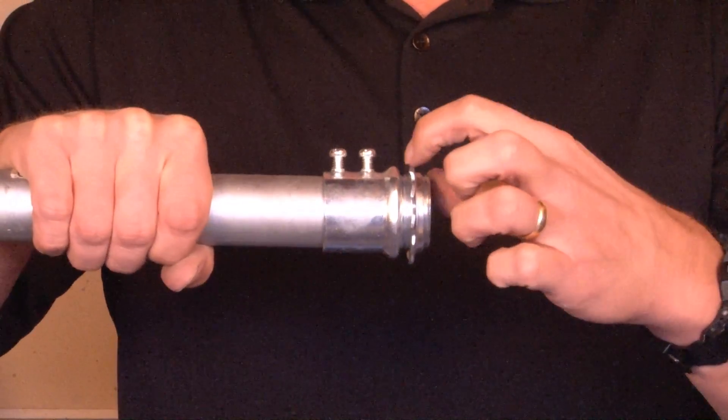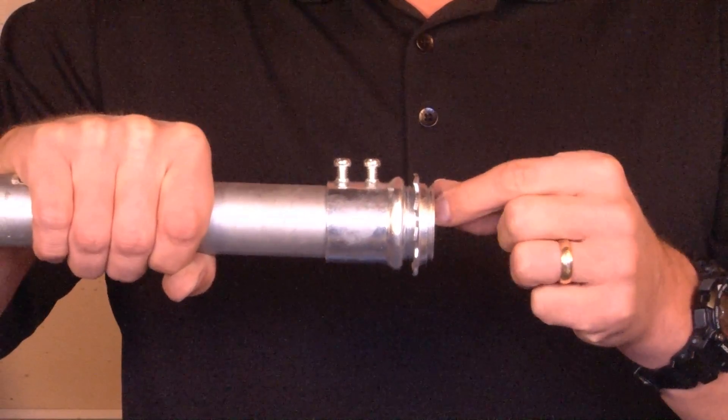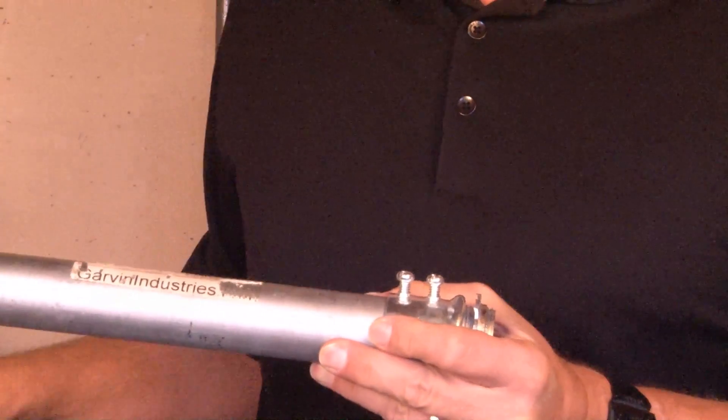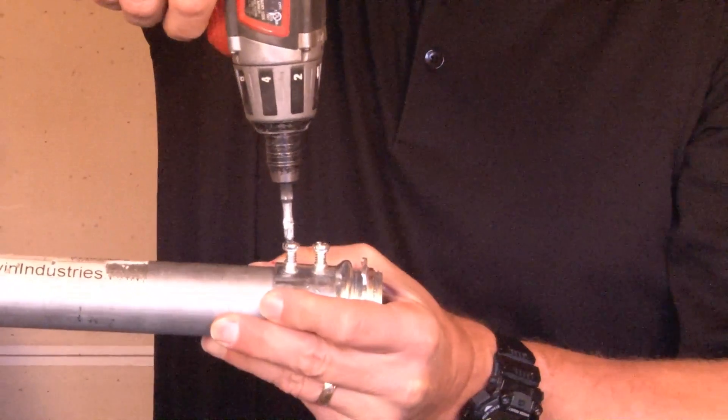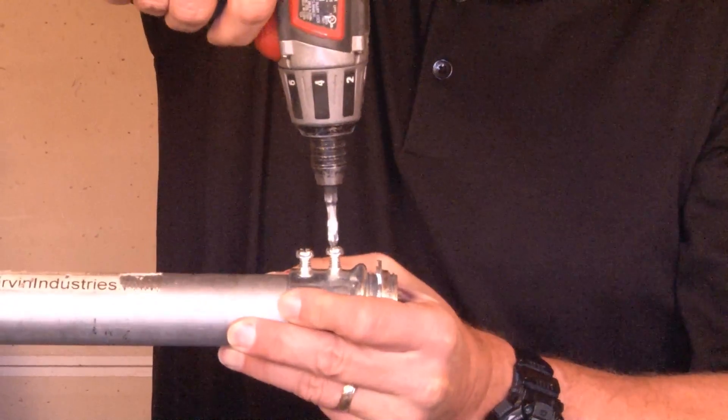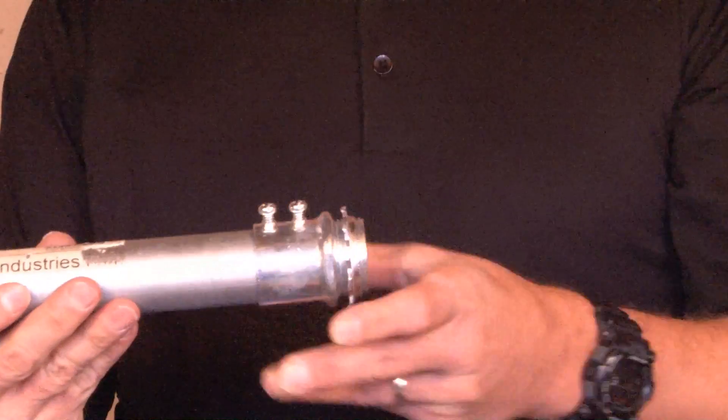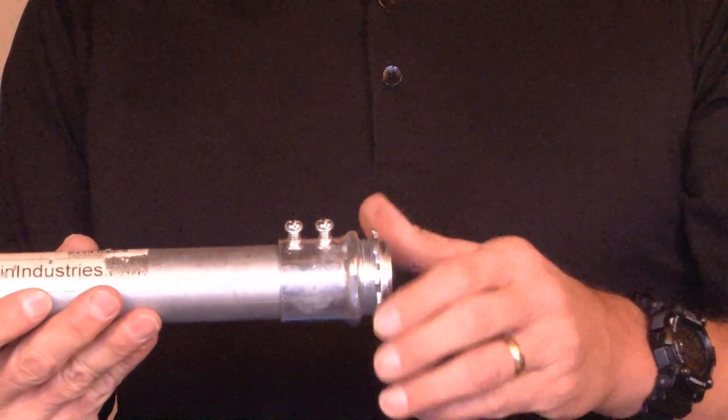It naturally hits a stopping point right in the middle of the connector and allows the installer to hold it in place and tighten the two set screws, conjoining the pipe and the connector. At this point, the installer removes the preinstalled lock nut.